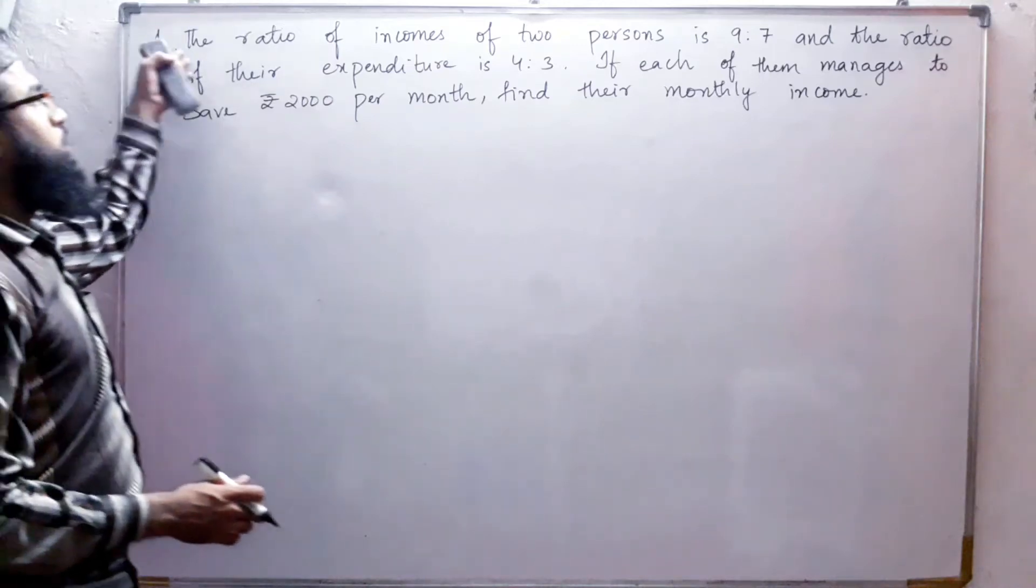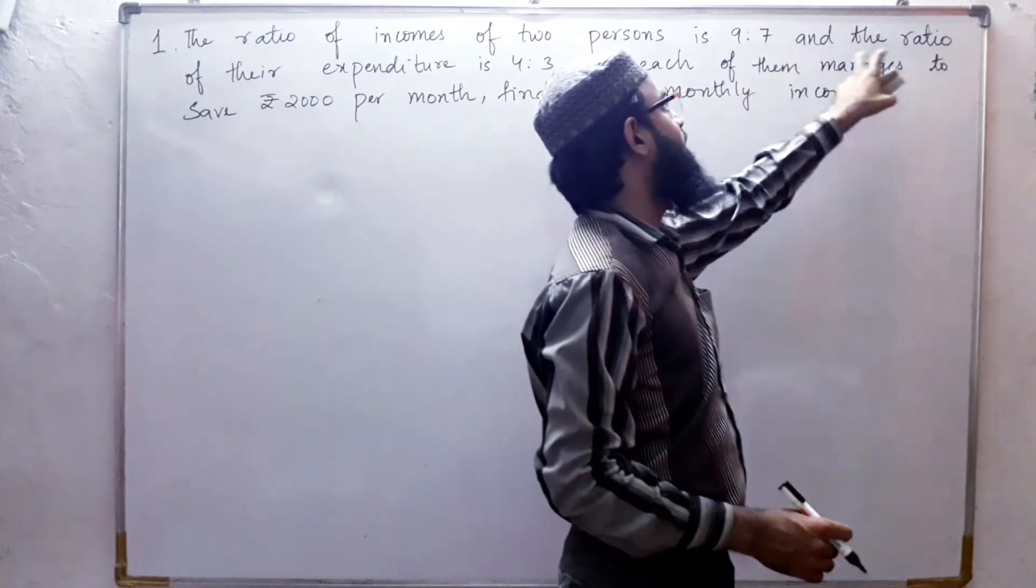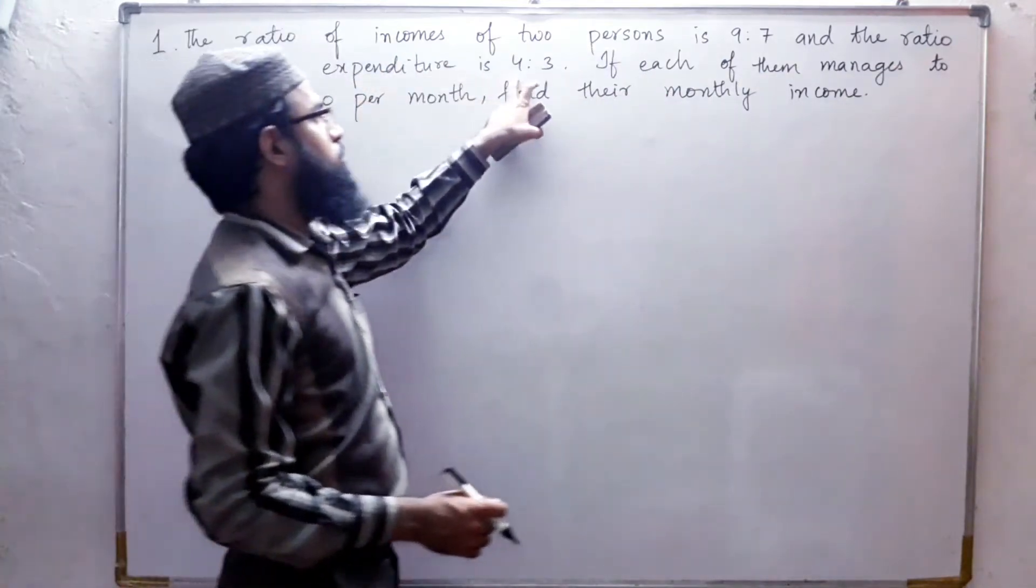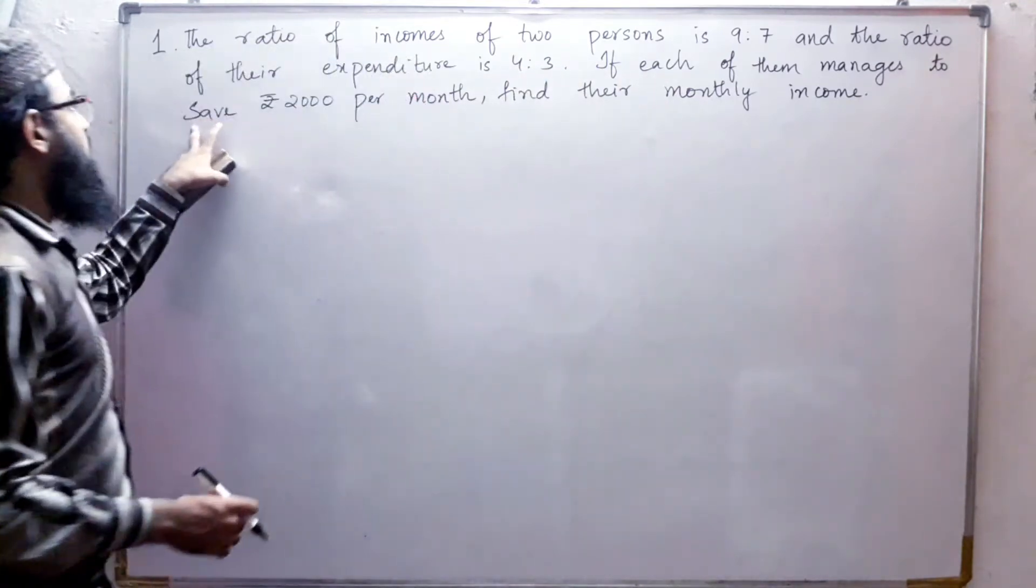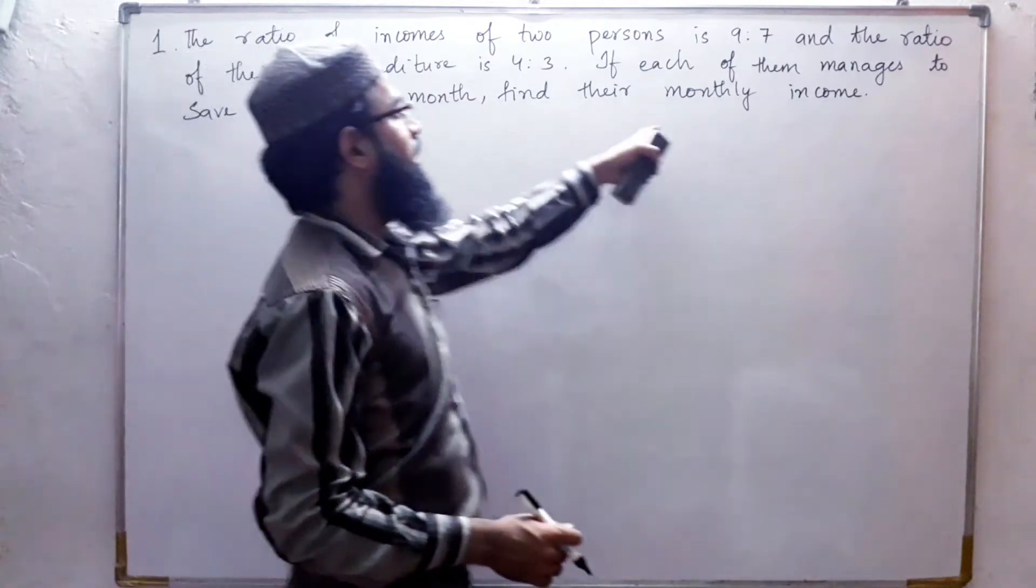First problem: the ratio of incomes of two persons is 9 to 7 and the ratio of their expenditure is 4 to 3. If each of them manages to save 2000 rupees per month, find their monthly income.